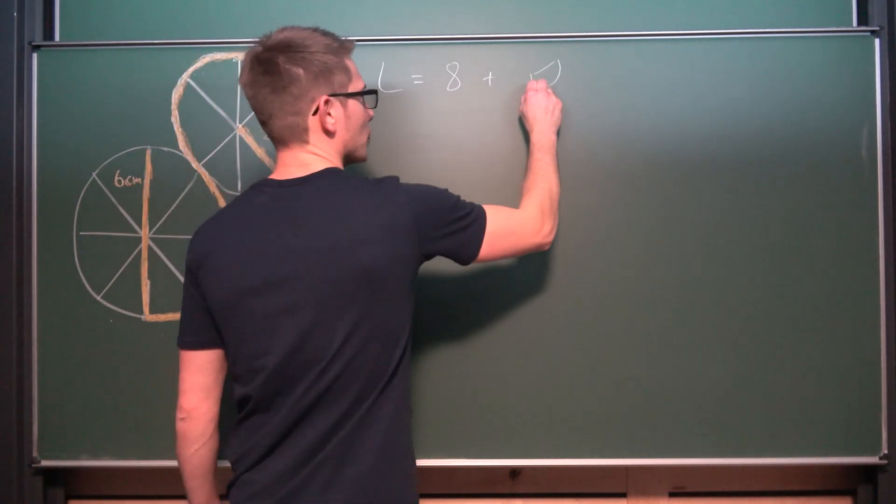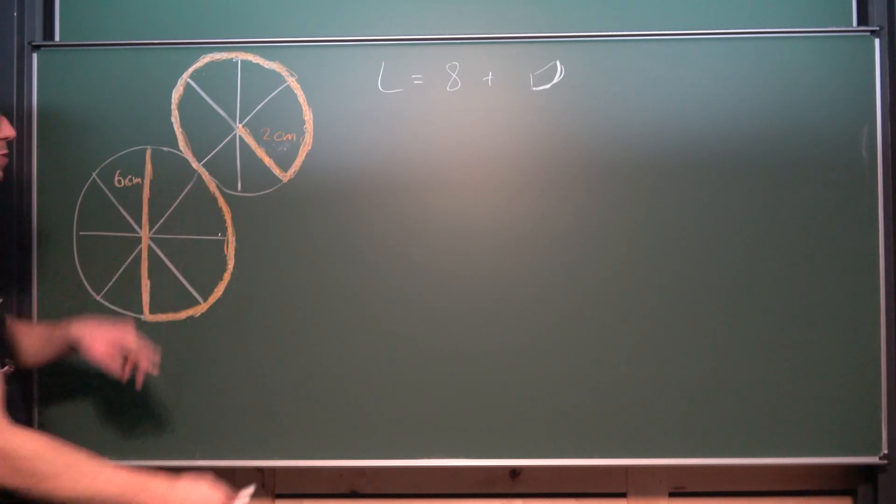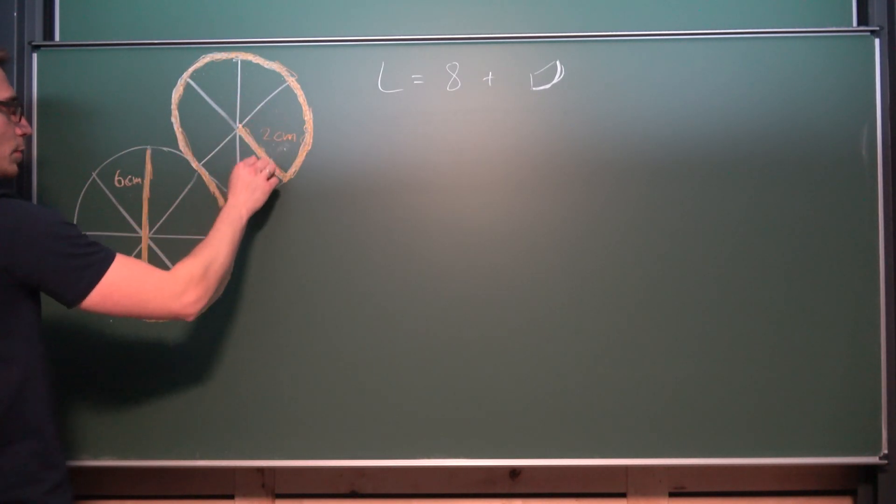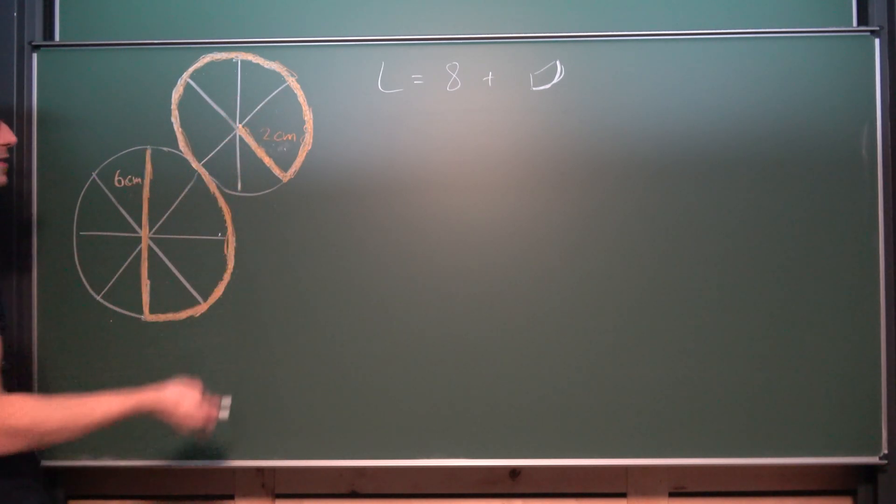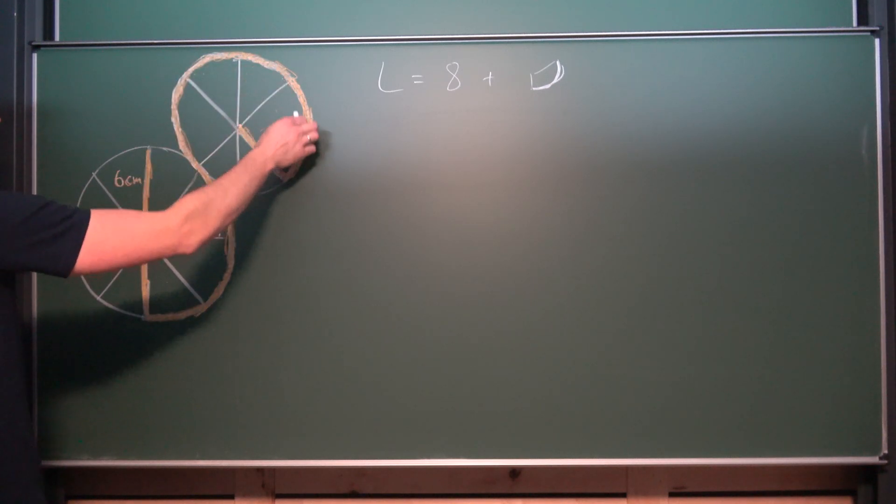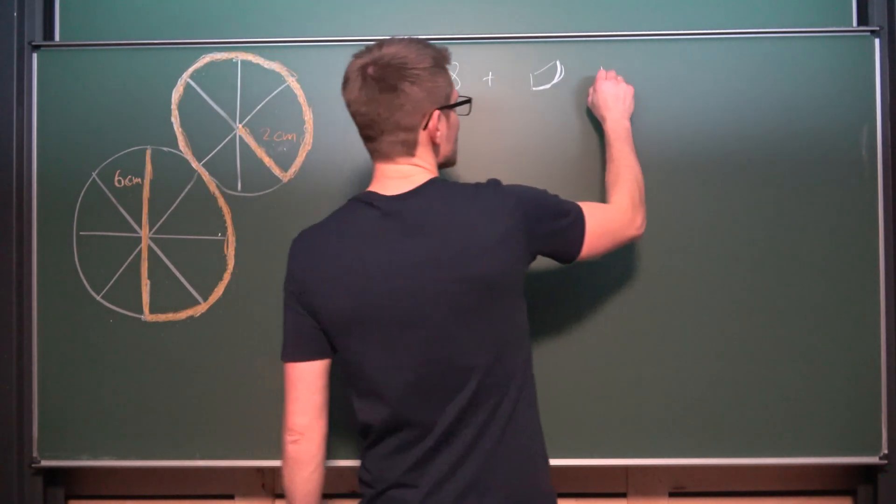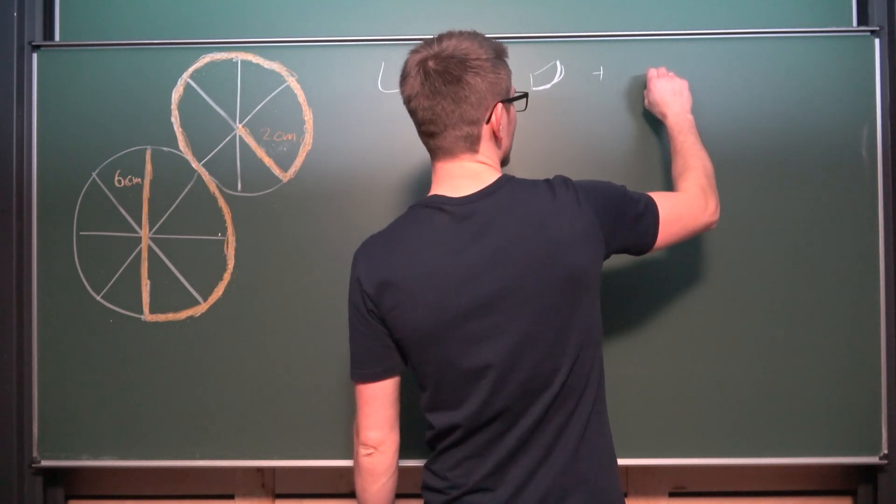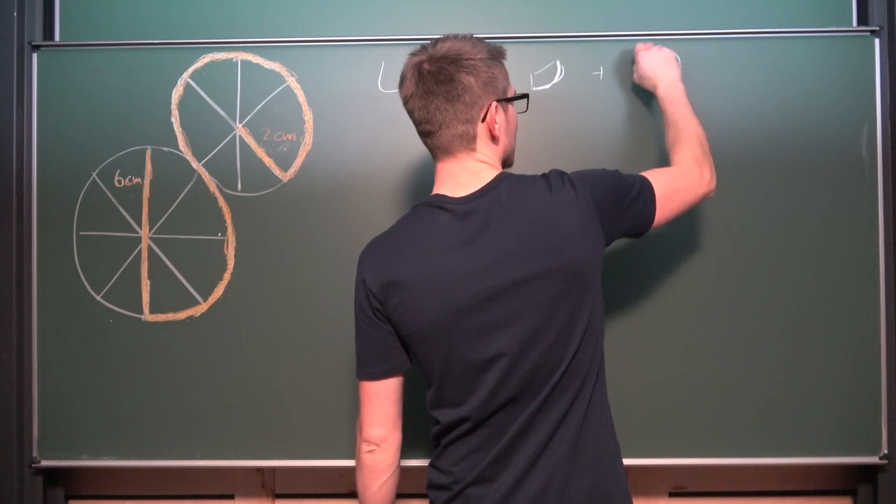And especially we are looking for this part here. Over here on the small circle we got 6 equal parts. At least in a nice sketch we got 6 equal parts. Here we got 6 non-equal parts. But 4 of those parts are covered which are part of our length. So what we need to do is find the length of this arc on the outside.